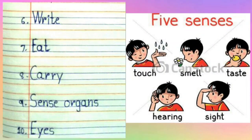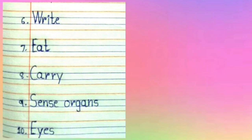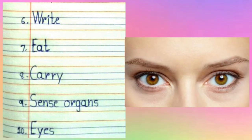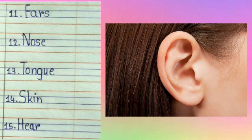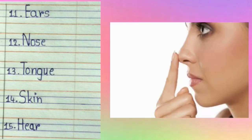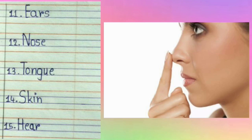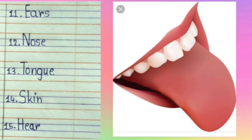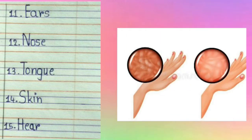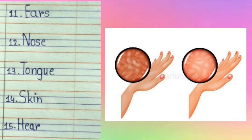Ninth number is sense organs. S-E-N-S-E-O-R-G-A-N-S. Sense organs, yaani ki, indriyo, yaato, gnanendri. Tenth number is eyes. E-Y-E-S. Eyes, yaani ki, aakhe. Eleventh number is ears. E-A-R-S. Ears, yaani ki, kaan. Twelfth number is nose. N-O-S-E. Nose, yaani ki, naak. Thirteenth number is tongue. T-O-N-G-U-E. Tongue, yaani ki, jeep. Fourteenth number is skin. S-K-I-N. Skin, yaani ki, twacha, yaato, chambra.